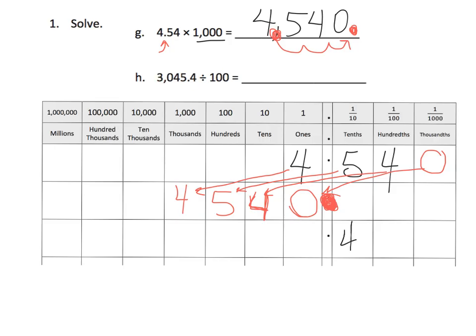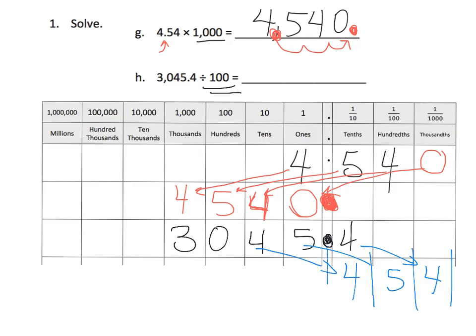So anyway, let's do one last practice right here on this screen. So we've got 3,045.4. Now we are dividing by 100, which means each of those digits is going to move two places to the right. So the 4 goes there, the 5 goes here, the 4 goes here, and then there's the decimal. And then the 0 goes here, and then the 3 goes here. And so our answer becomes 30.454.